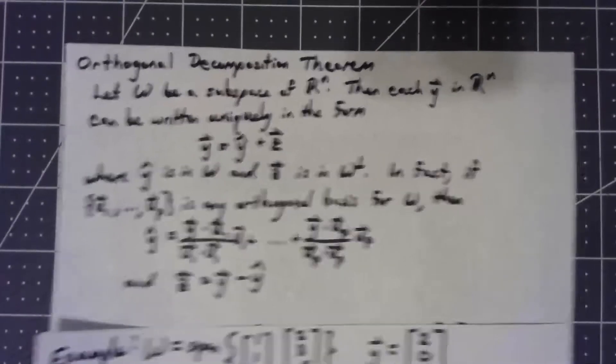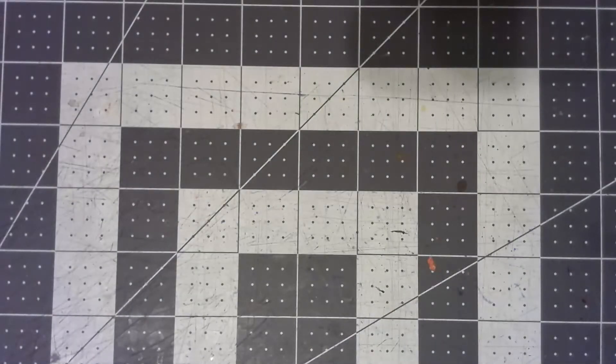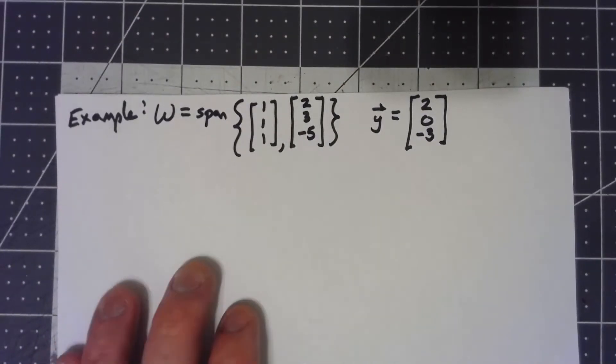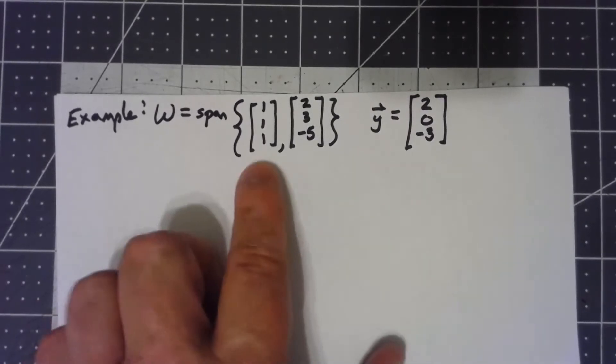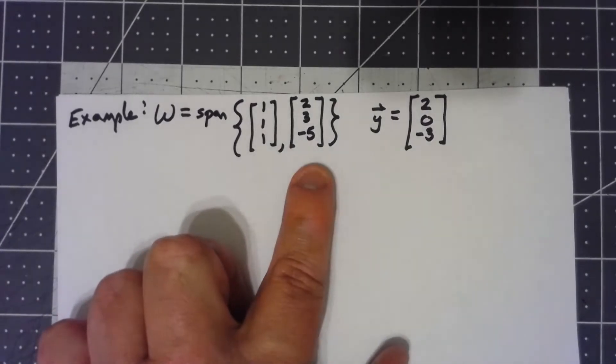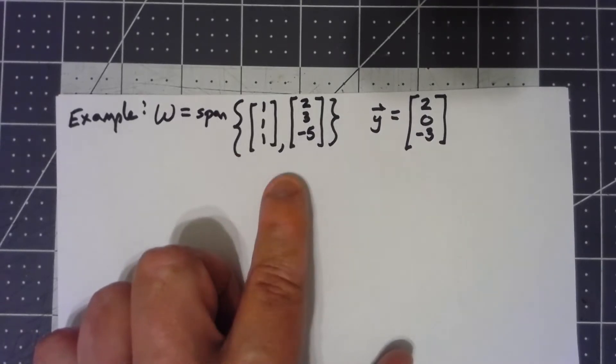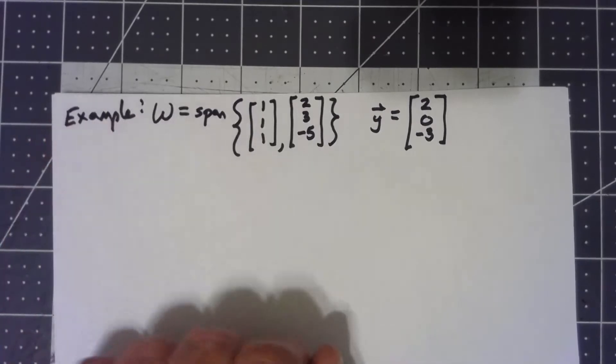Talking about it in an abstract way like that is pretty difficult, so let's go through an example. Let's say that w is a subspace of R³, which is the span of the vectors (1, 1, 1) and (2, 3, -5). Well, first thing, it is worth noting that these vectors are orthogonal. If I take their dot product, I get 2 plus 3 minus 5 is 0. When the dot product is 0, those vectors are orthogonal.